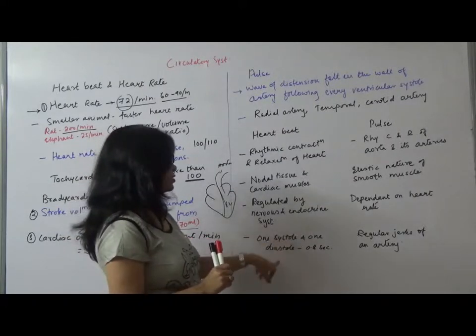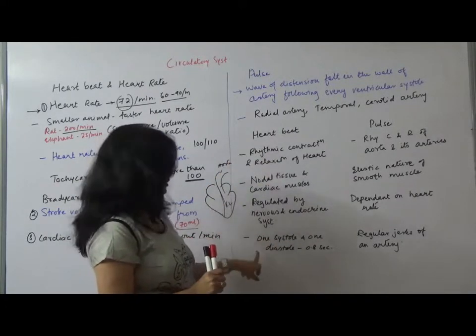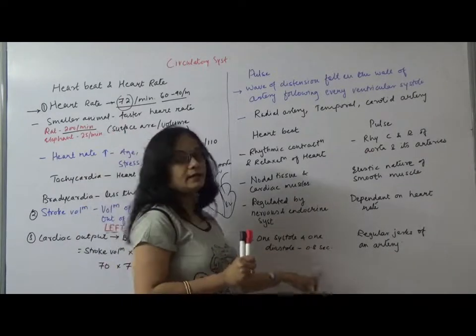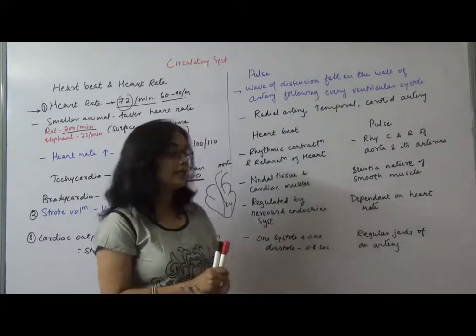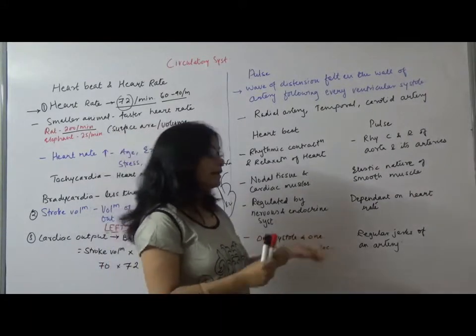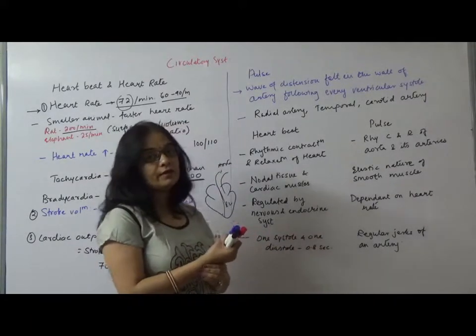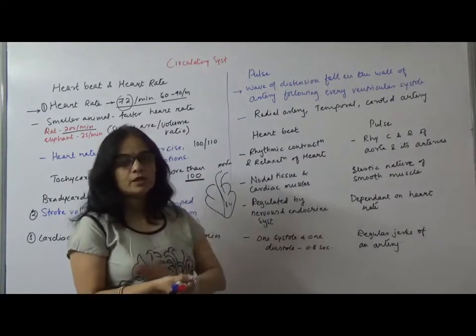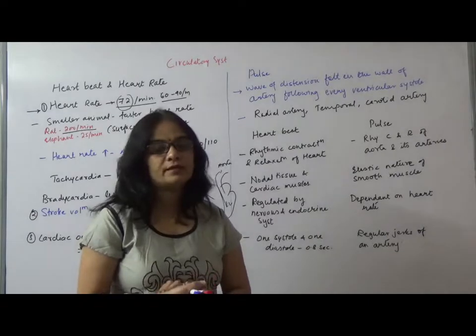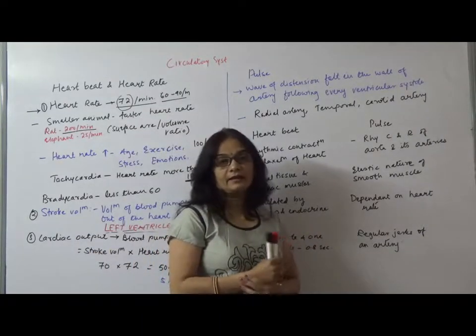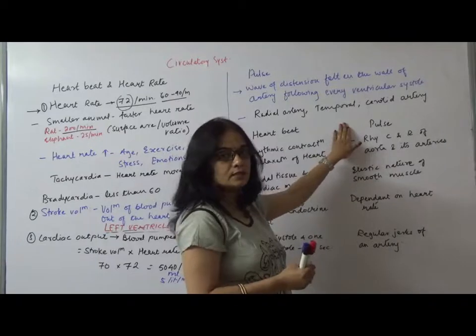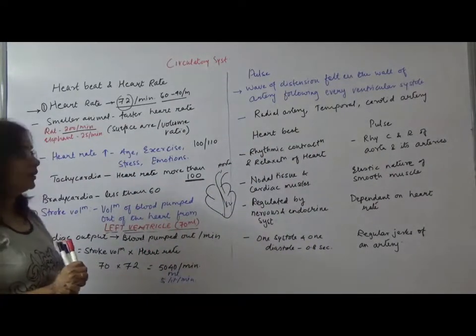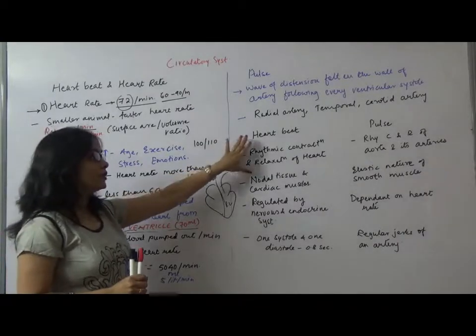This is regulated by nervous and endocrine system whereas pulse is dependent on heart rate. One systole and one diastole makes one heartbeat, called cardiac cycle of 0.8 second, whereas there is regular jerk you can feel. When blood is pushed in arteries, the jerk felt at the artery makes pulse. This is the difference between heartbeat and pulse.